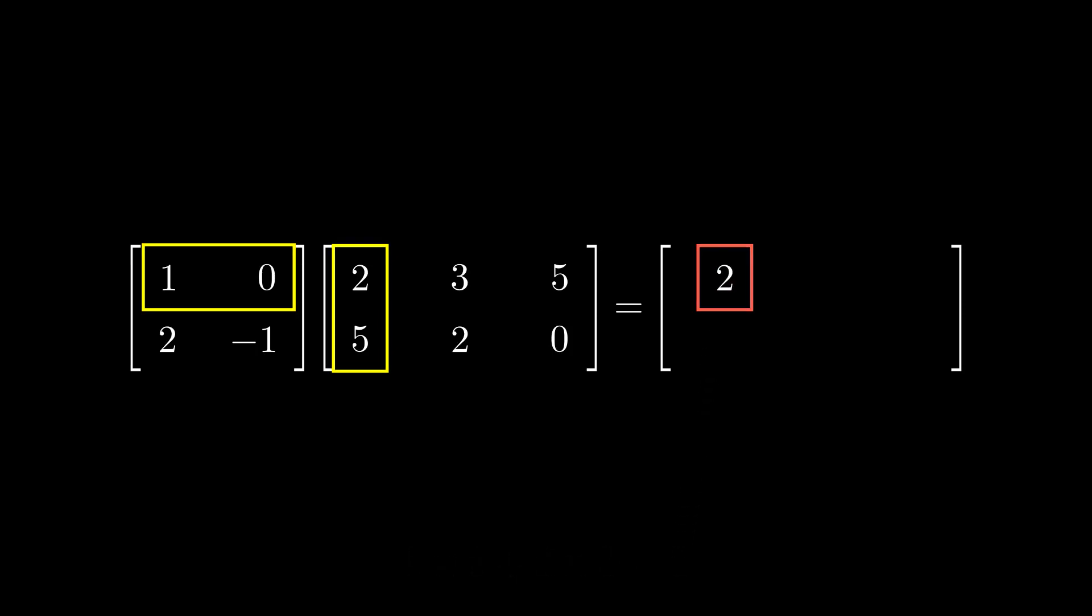Then, to get the second column first row, we take the dot product of the first row of the left matrix and the second column of the right matrix.